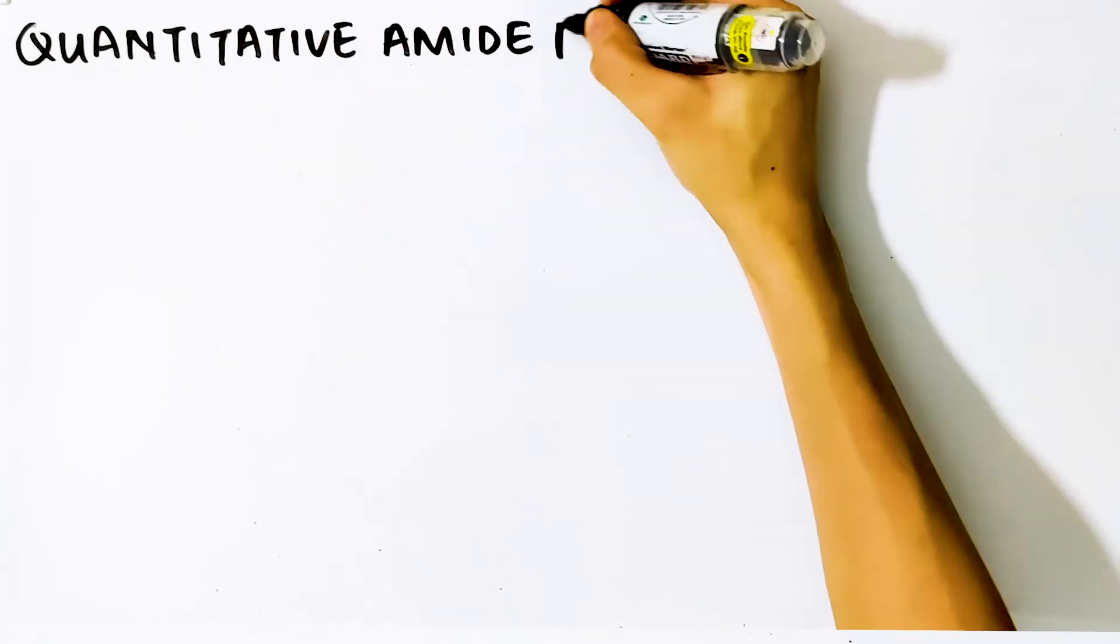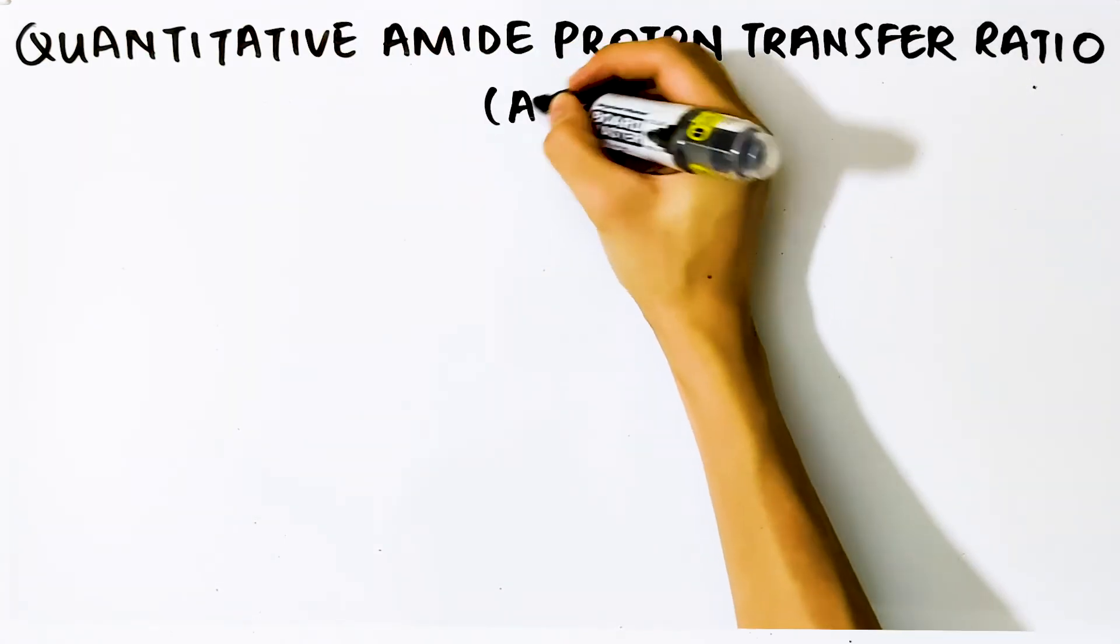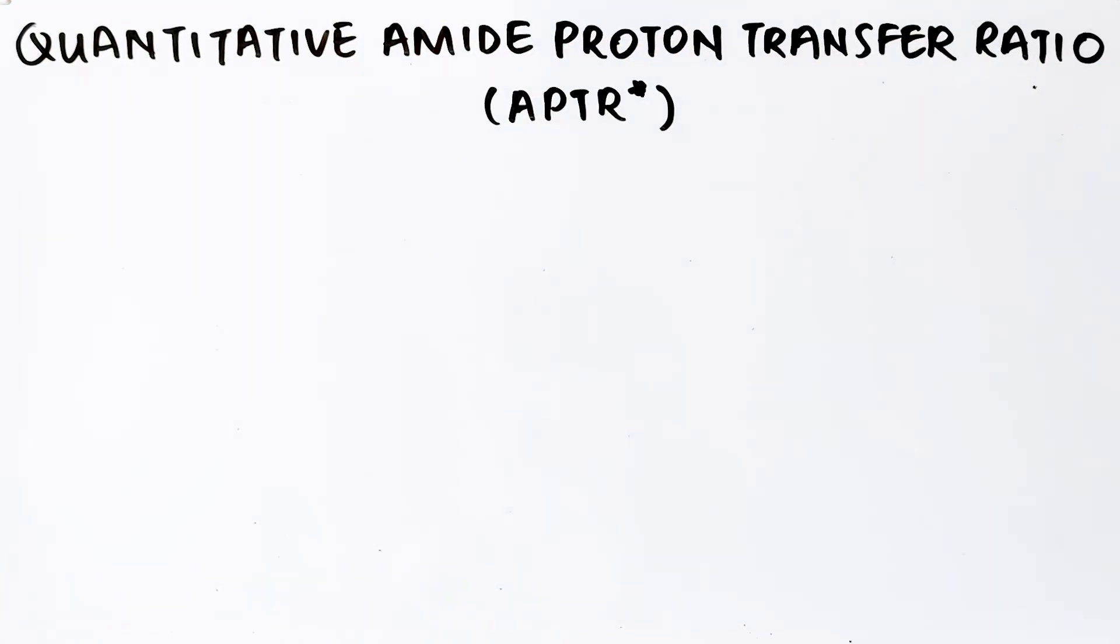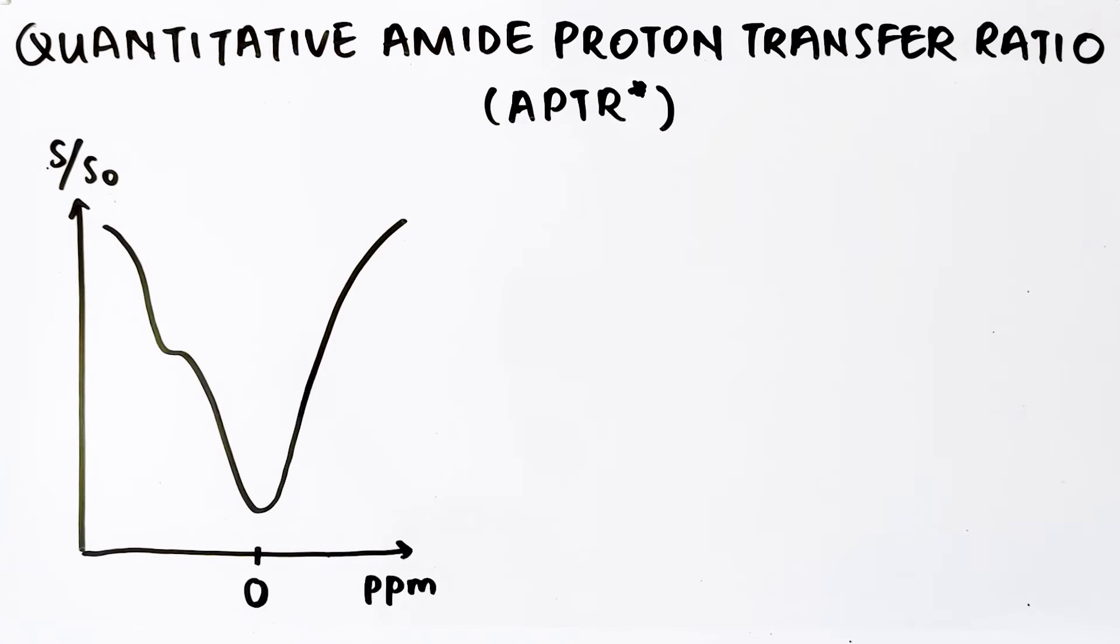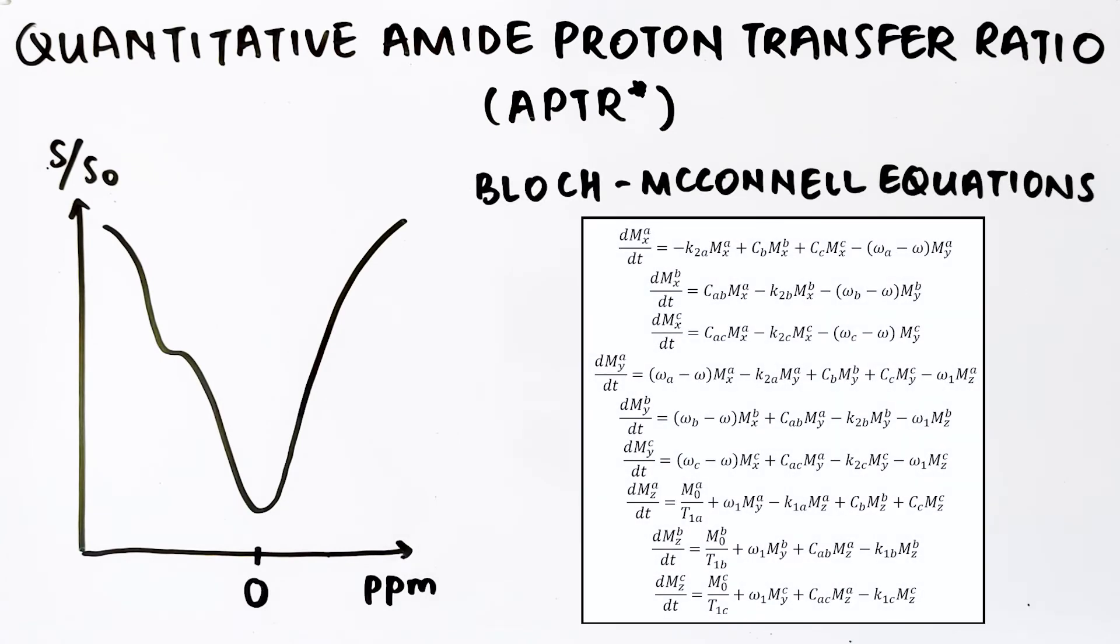To model the actual underlying CEST processes of the system, the Bloch-McConnell equations are used. The quantitative amide proton transfer ratio, denoted as APTR asterisk, uses the multi-pool Bloch-McConnell model to isolate APT effect. First, fit the Z-spectrum to the multi-pool Bloch-McConnell model. Then, using the fitted parameters,